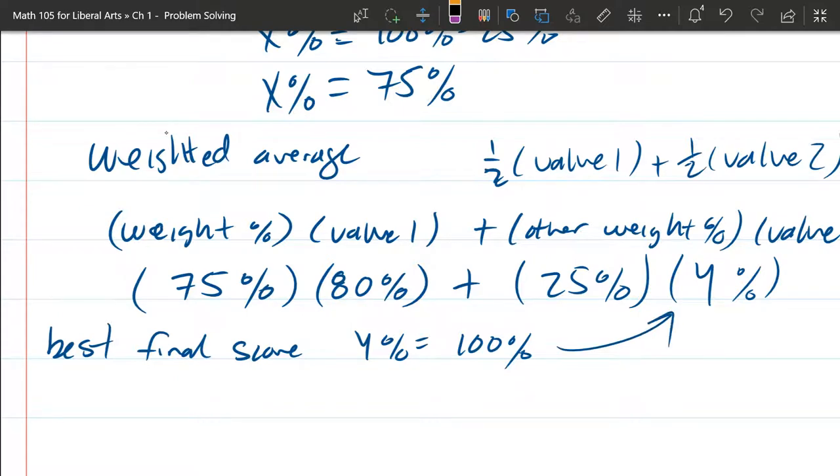The other thing I'm going to do is turn all the percents into decimals. So 75% is 0.75, 80% is 0.80, plus 25% is 0.25. And Y is 100%, so that's 1.00.